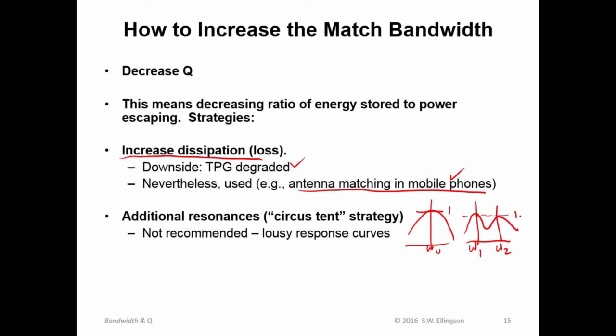And then in between it would do something undesirable, probably. It would have to be less because the TPG of a passive circuit is not greater than one. But that's a not crazy idea. So this is sometimes referred to as the circus tent strategy. The idea is that this kind of response looks like a circus tent where these are the poles that are holding up the high points in the tent.